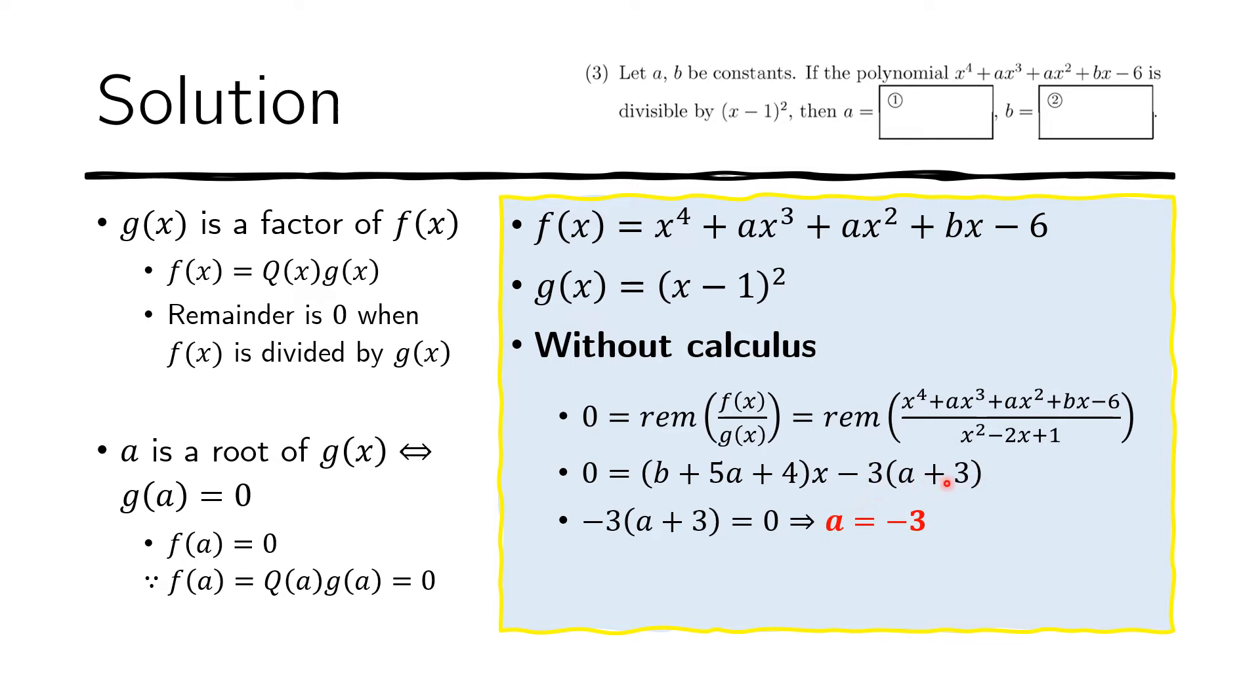And so if we solve this first one, we see that a equals negative three. And now because we already have negative three, we can plug it in here to solve for the second one. And if we do that, we get b equals 11. And in fact, this is the answer that we're looking for.